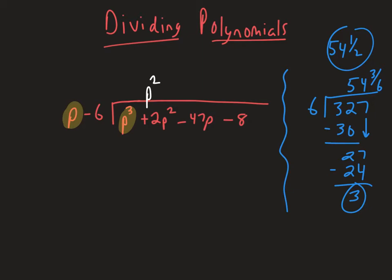And then we do the same thing we did with the numerical example. We're going to multiply p squared times the p minus 6 out here. So it's going to become p cubed minus 6p squared. What I'm doing there is taking the p squared, multiplying it by the p minus 6, just like we did here when we got the 5, we multiplied it by 6 to get 30. It's the exact same process, it just feels different, but it's really the same thing.